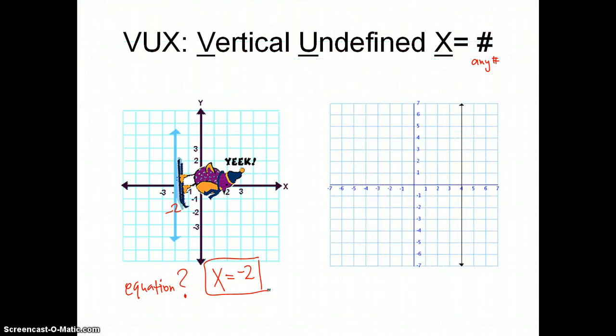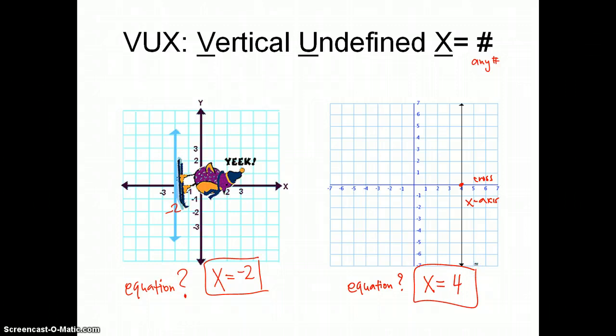And here's another example. What would be my equation for this line? Vox tells me that it's going to be x equals, and that number crosses at the x axis at 4. Very good. So 4 would be my answer. x is equal to 4.